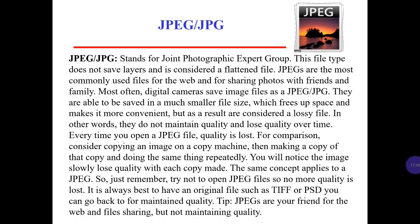JPEG stands for Joint Photographic Expert Group. This file type does not save layers and is considered a flattened file. JPEGs are the most commonly used files for the web and for sharing photos with friends and family. Most digital cameras save image files as a JPEG. They are able to be saved in a much smaller file size, which frees up space and makes sharing more convenient. But as a result, they are considered a lossy file — they do not maintain quality and lose quality over time.